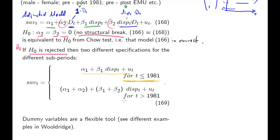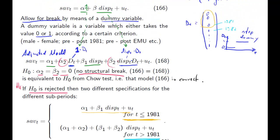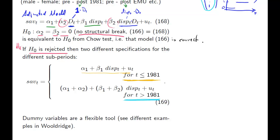Thinking about the second part of the sample, t larger than 1981, this is the case where our dummy variable takes the value 1. We have alpha 1 plus alpha 2 times 1, so a new constant alpha 1 plus beta 2. We have beta 1 times disposable income plus beta 2 times disposable income times 1, which can be summarized as beta 1 plus beta 2 times disposable income.